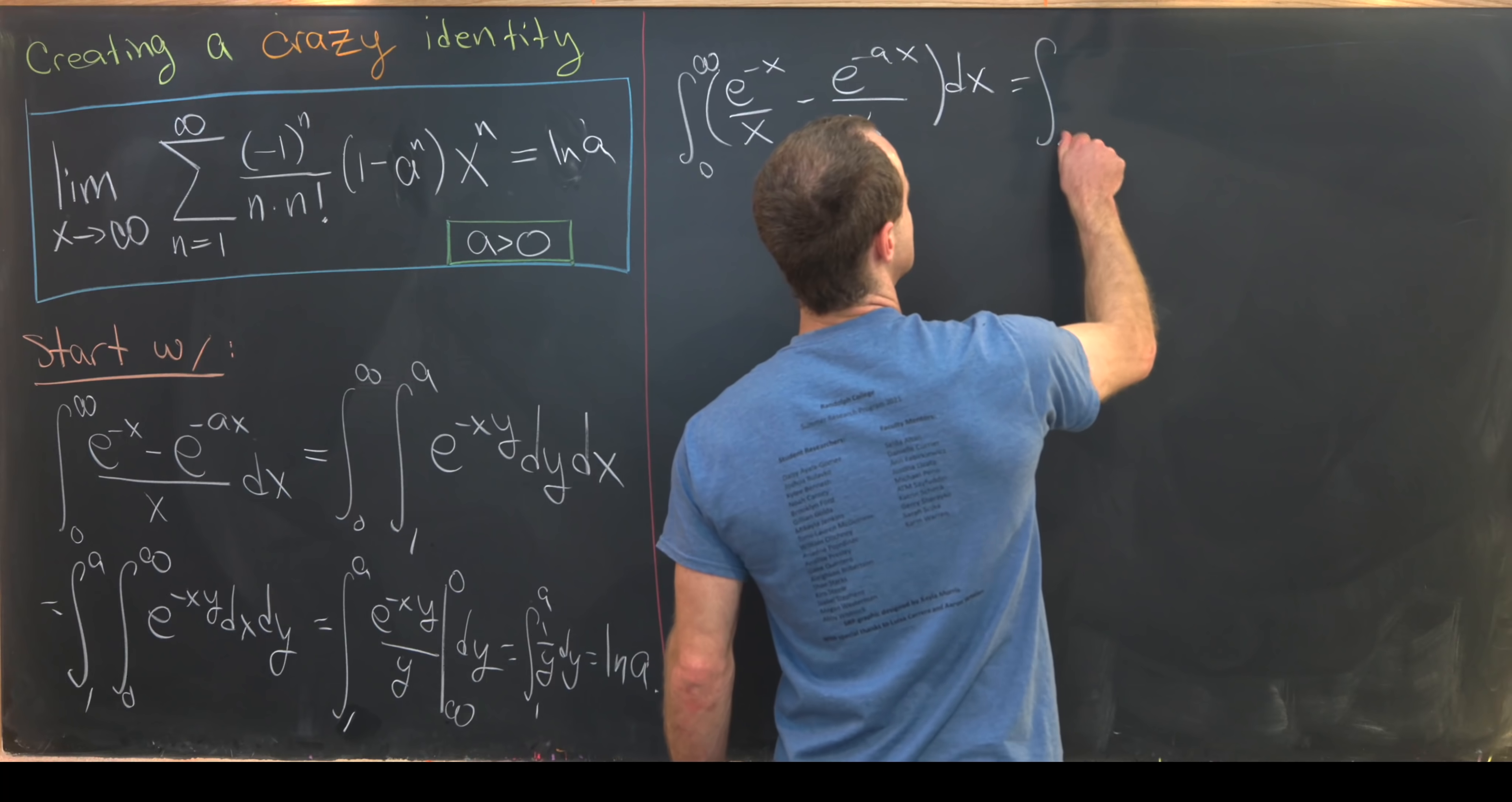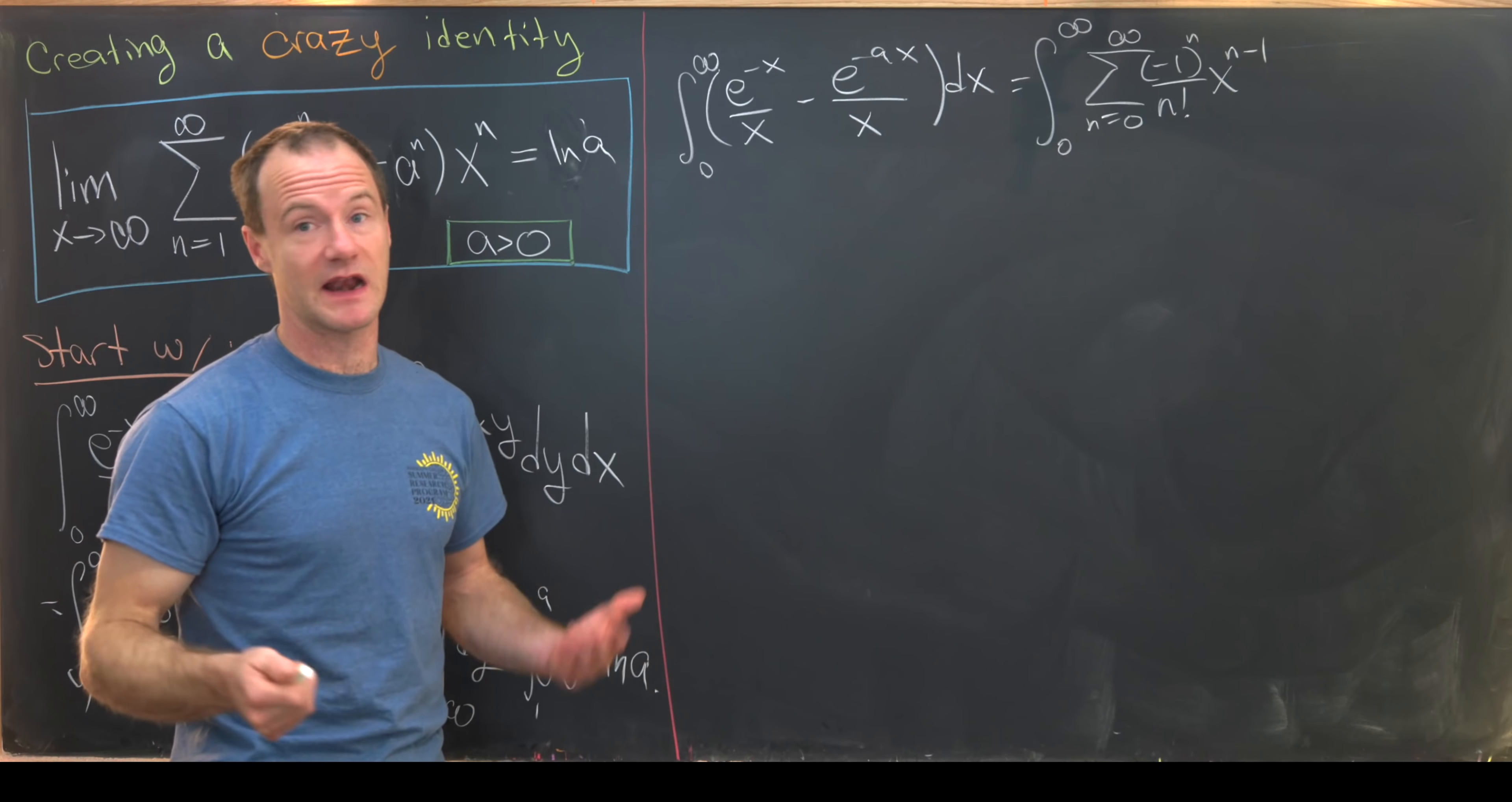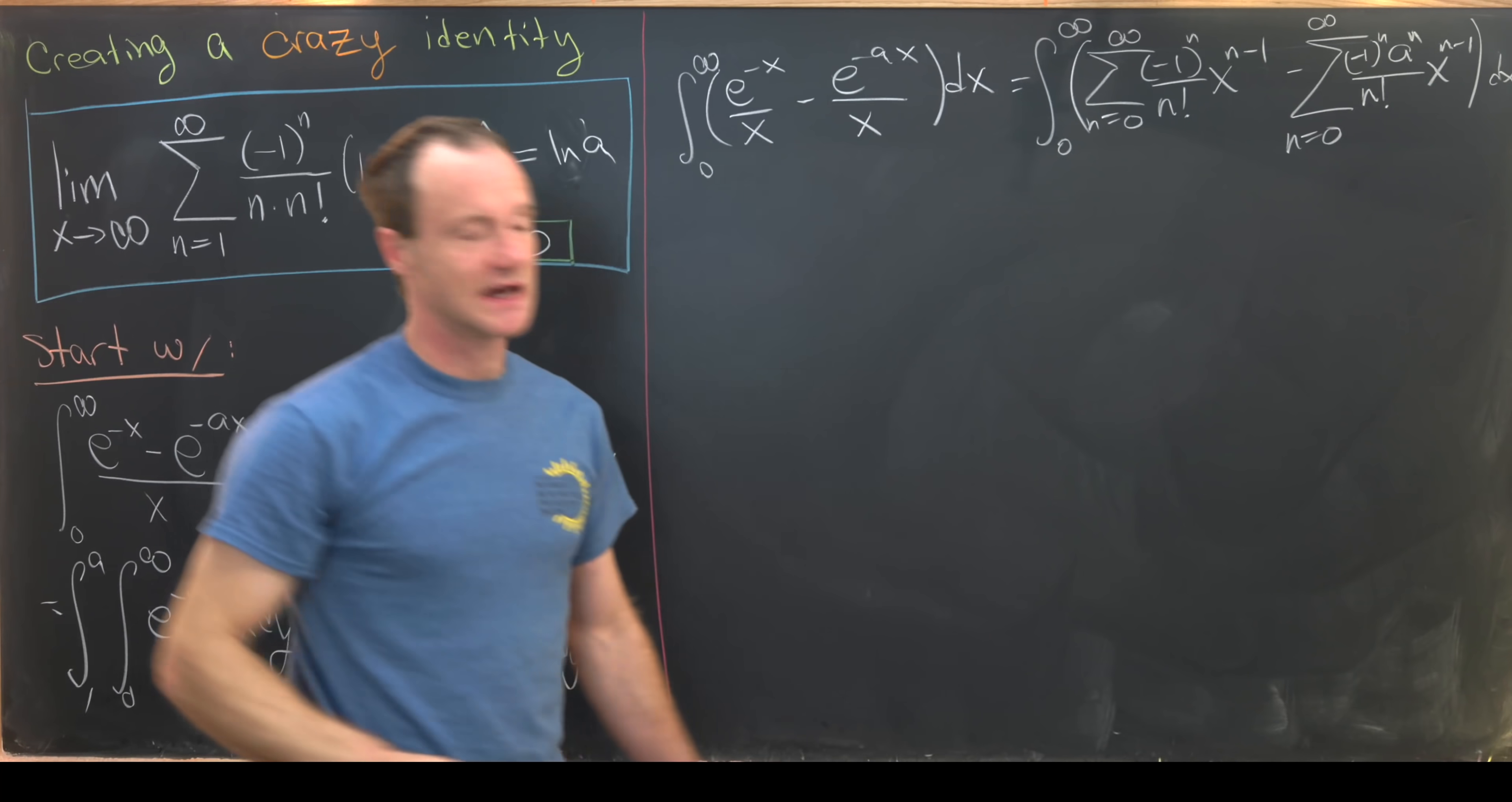That's going to give us the integral from 0 to infinity and now we have the sum as n goes from 0 up to infinity of minus 1 to the n over n factorial and then we'll have x to the n minus 1. It generally would be x to the n but we've got this x in the denominator so I'll make that x to the n minus 1. And then for my next term I'll have my sum as n goes from 0 to infinity minus 1 to the n a to the n over n factorial and another x to the n minus 1.